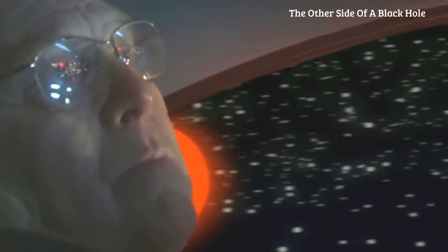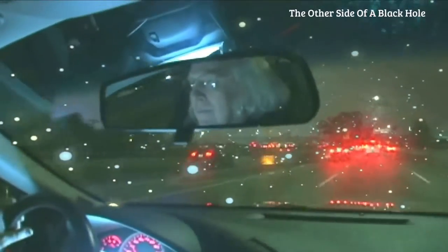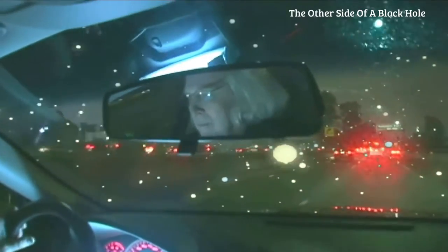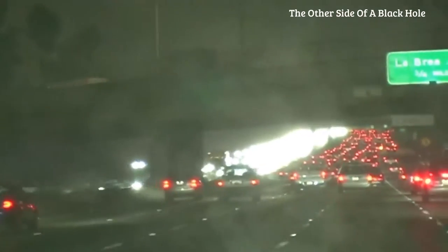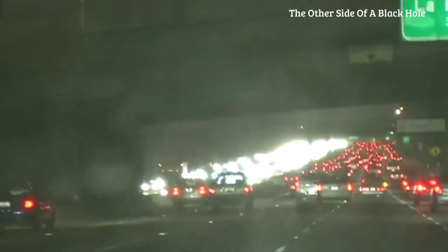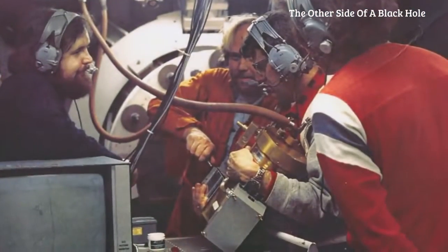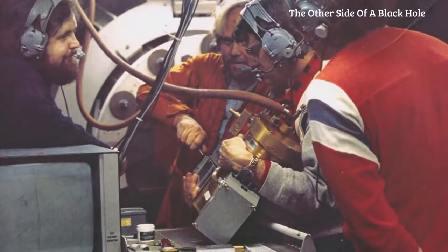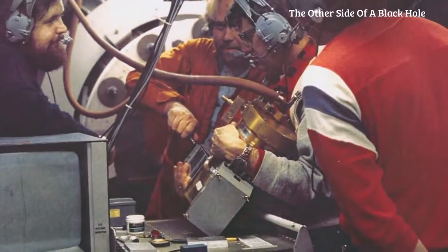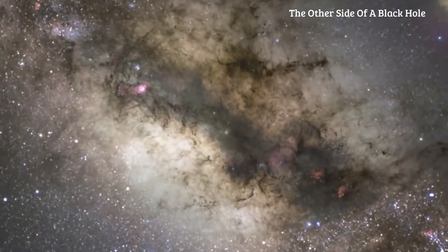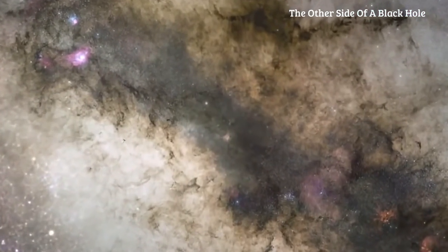But our galaxy is a different story. We live inside it. To pinpoint its center, Becklin had to find a way to see through all the dust and gas that obscure our line of sight. He went to a military contractor and obtained a device that reads infrared light. Its wavelengths are similar to the distances between particles in a dust cloud, which allow it to move right through the dust.